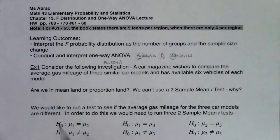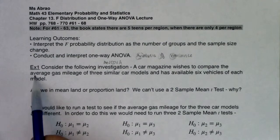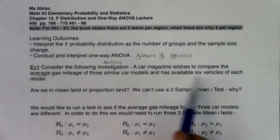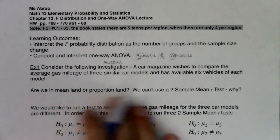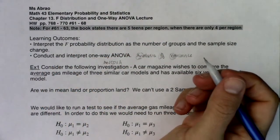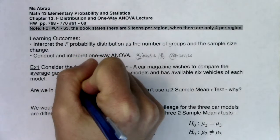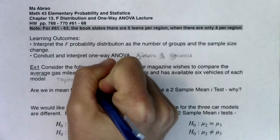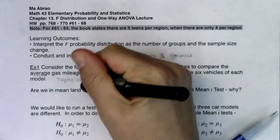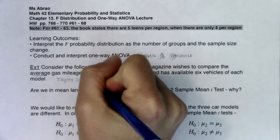And as long as you just have the one numerical variable you're looking at, you're running one-way ANOVA. So let me give you a scenario here. Consider the following investigation: A car magazine wishes to compare the average gas mileage of three similar car models and has available six vehicles of each model. So just before we even get going into this, pretend you had three car models you wanted to compare. Just thinking off the top of my head, I'll tell you the car I drive, I drive a Toyota Corolla.